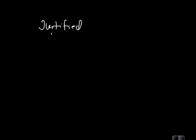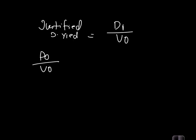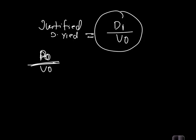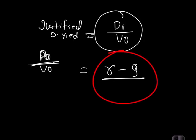A clarification on dividend yield: while we derived D1/V0, the curriculum also presents a formula for D0/V0. If you place (1 + G) in the denominator, the numerator automatically becomes D0 instead of D1. So the D0 version of justified dividend yield is (Ke − G) / (1 + G).